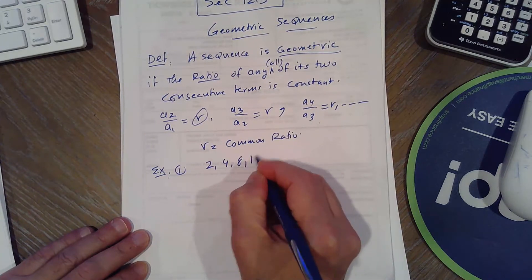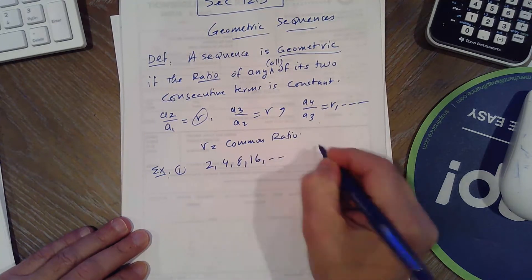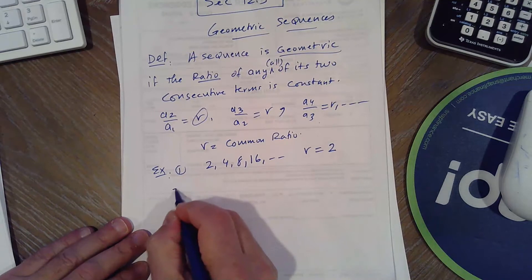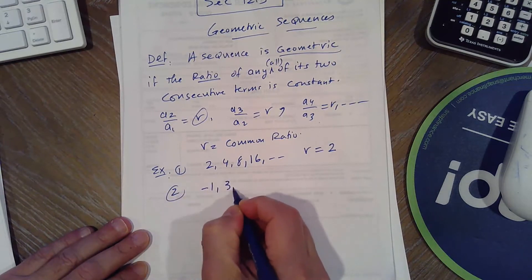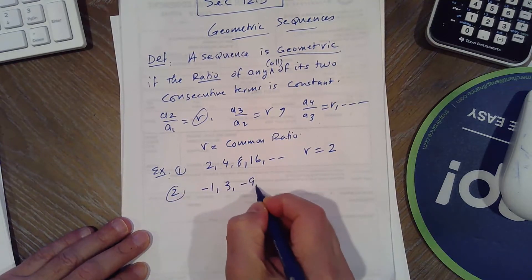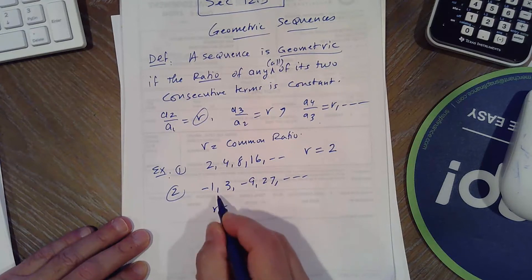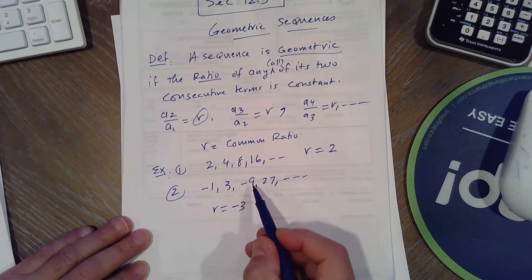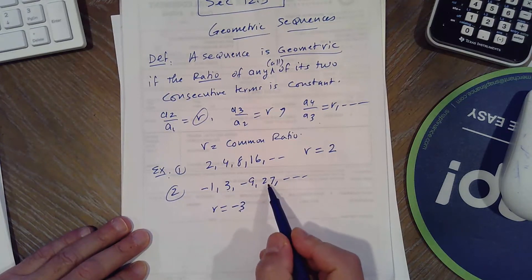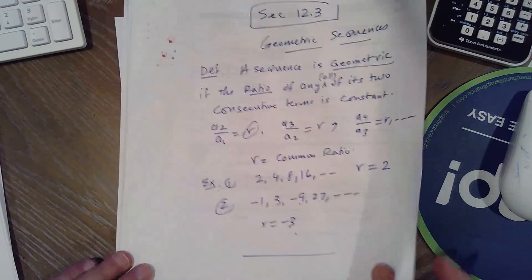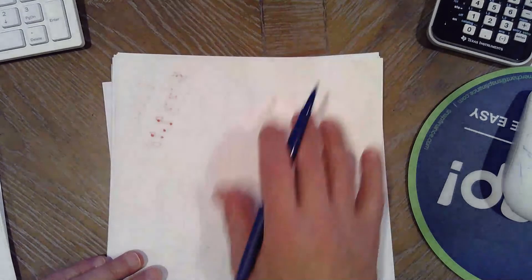For example, 2, 4, 8, 16 — the common ratio is 2. Another example: -1, 3, -9, 27. The common ratio is 3 divided by -1 = -3, then -9 divided by 3 = -3, and 27 divided by -9 = -3. So the common ratio is -3.